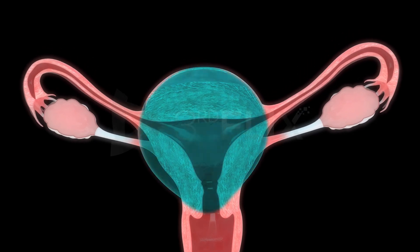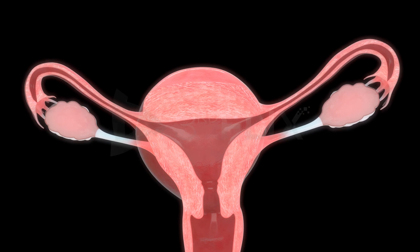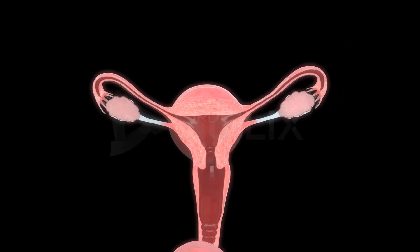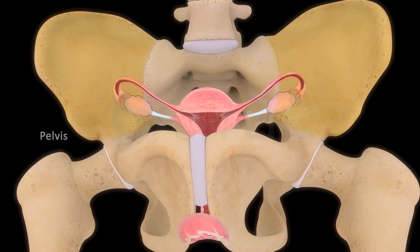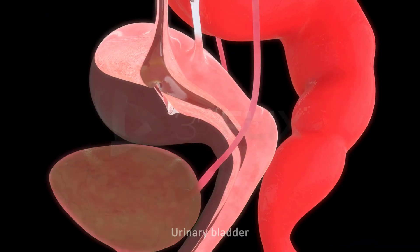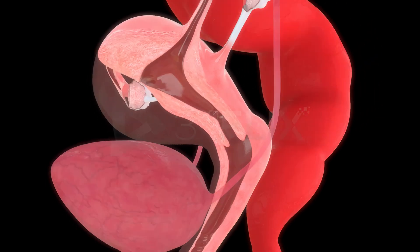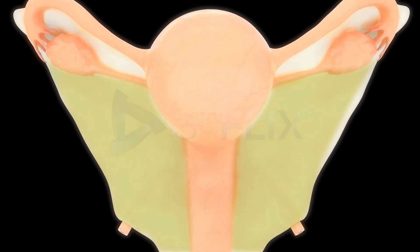The uterus is a single, large, muscular and glandular, inverted pear-shaped sac. It is about 8 cm long. It is located in the pelvis, dorsal to the urinary bladder and ventral to the rectum. The uterus is supported by ligaments attached to the pelvic wall.